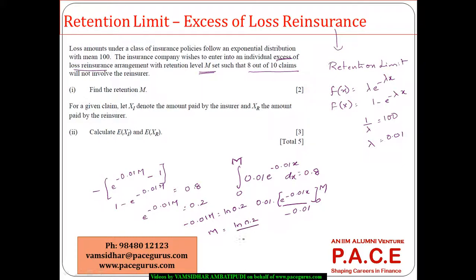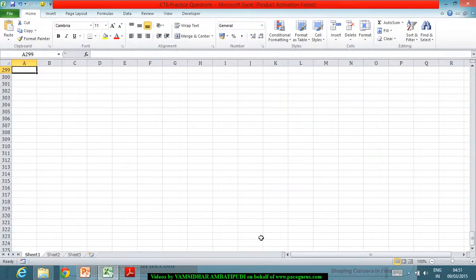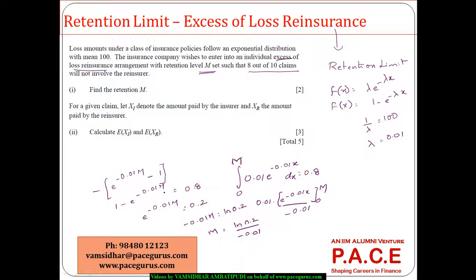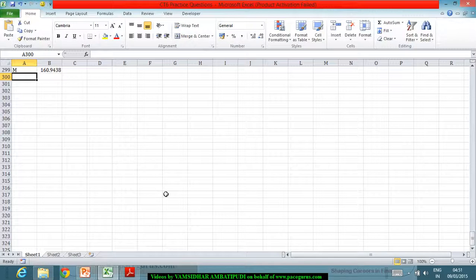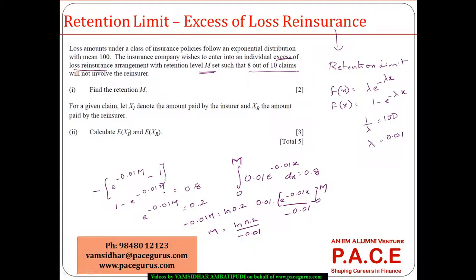This directly gives us the retention limit M = log(0.2) / (−0.01), which works out to approximately 160.94. So if the retention limit is set around 160.94, there is an 80% chance of retaining the claim and a 20% chance it is transferred to the reinsurer.